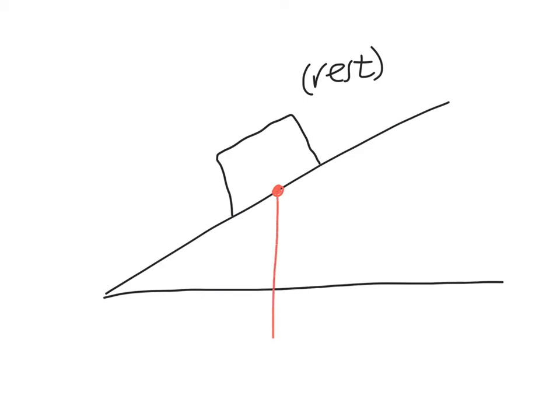Gravity is always going to point straight down. The normal force is perpendicular to the surface, and the frictional force will be parallel to the surface. Forgot to label FG.